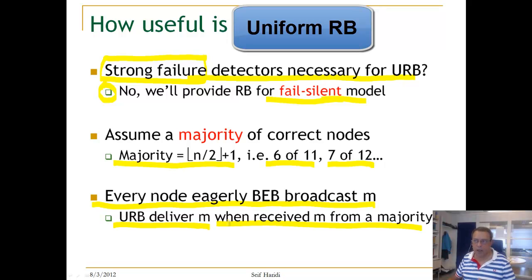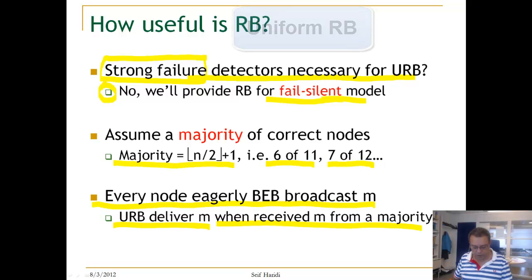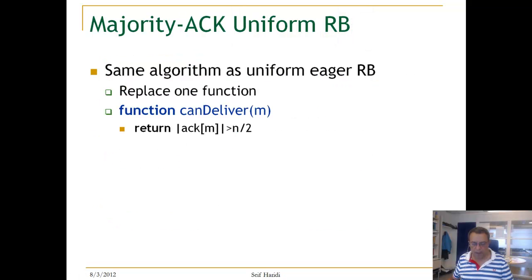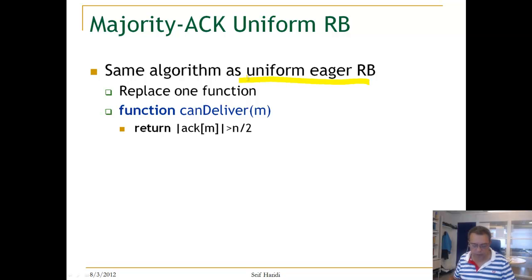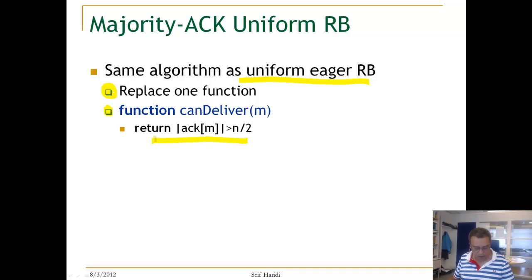It's as simple as that. It's our old algorithm — the uniform eager broadcast — just now it can deliver by waiting for acknowledgement from a majority of processes. We replace one function, which is can_deliver, to wait for ACKs from a majority. That is really all.